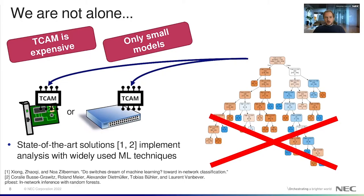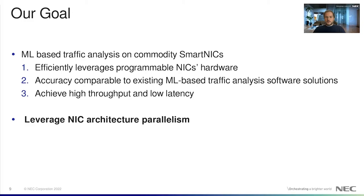Our goal is to enable machine learning traffic analysis on commodity SmartNICs, without the use of match-action table resources, and doing so while guaranteeing high throughput, low latency, and high accuracy. The intuition here is that NICs may provide a good amount of available processing resources, if their architectural parallelism is leveraged.